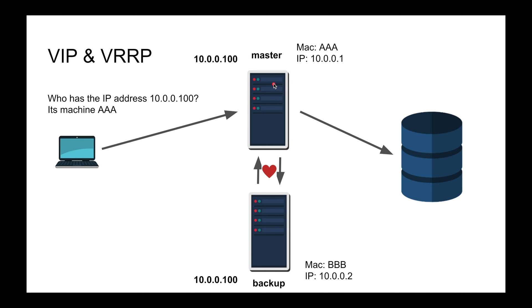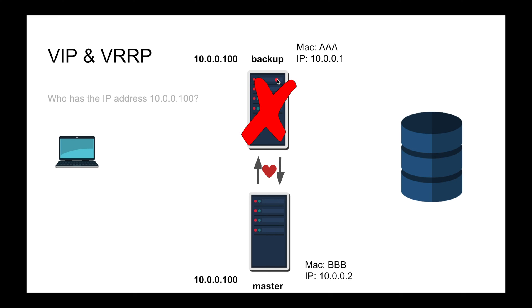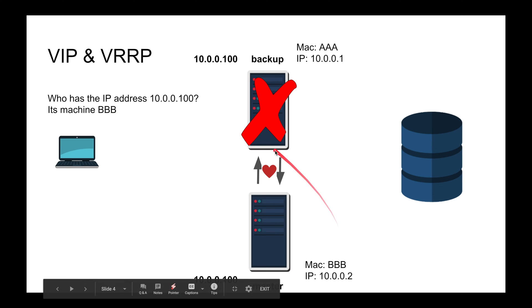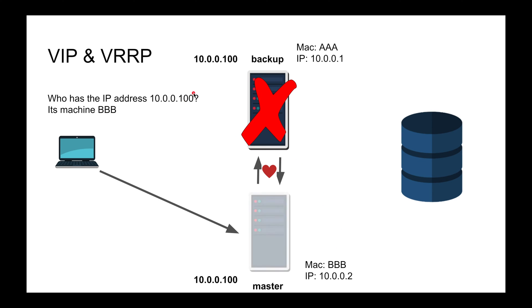If the active node fails, an ARP request will resolve to the other machine's MAC address and traffic will be forwarded there. That's essentially failover in a nutshell — if you're interested in the details, go watch that video.